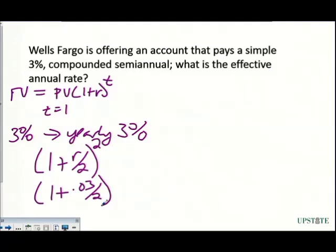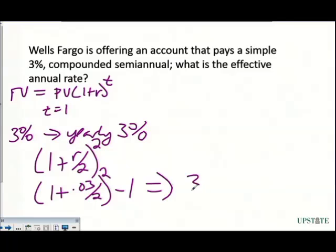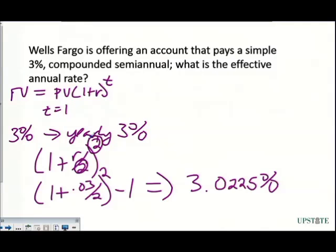That gives us 1.015 squared. Punching this into the calculator gives 1.030225, so we subtract 1 to get an effective annual rate of 3.0225%. Notice we have a 2 in the denominator and a 2 as the exponent — they always have to match. For a quarterly rate, it would be (1 + r/4)^4, then subtract 1.